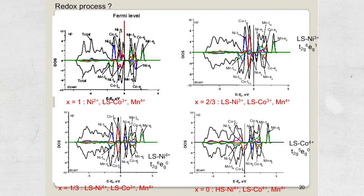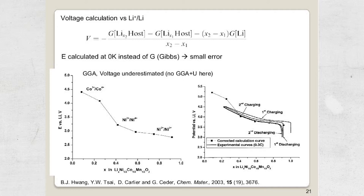At the very end of lithium de-intercalation, towards lithium content equal to zero, we observe the formation of cobalt 4+. So the sequence is: nickel 2+ → nickel 3+ → nickel 4+, and finally cobalt 3+ → cobalt 4+. We can also compute the theoretical voltages expected for these different redox couples, and the shape shows good agreement with the experimental electrochemical data. The redox processes were also confirmed by in-situ XANES studies by the group of Bing-Joe Hwang.